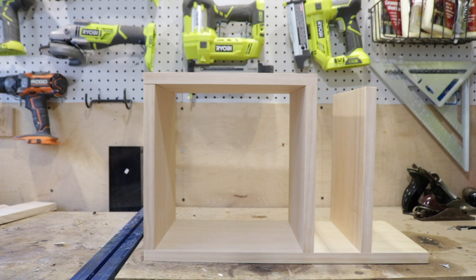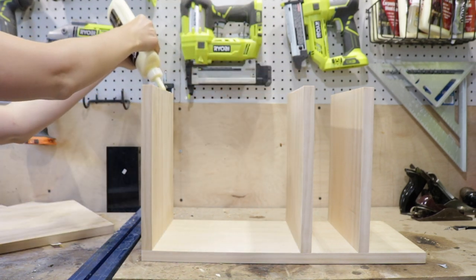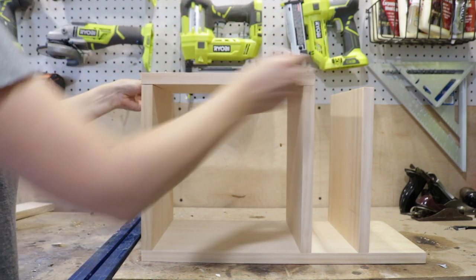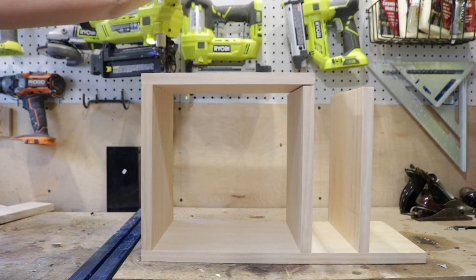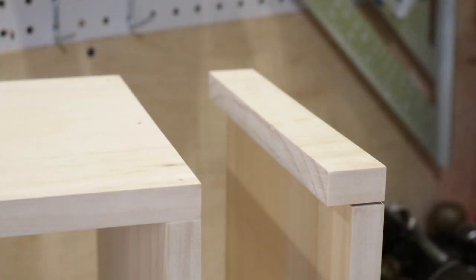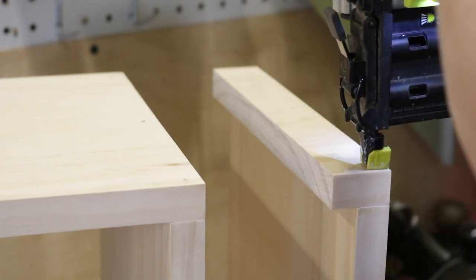Next step in the process will be to attach the front of the cubby. I just went ahead and did this by adding some wood glue and some brad nails through the front of the board and into those two shelving pieces. After that, attach the little piece that's going to prevent the bike from falling the same exact way.